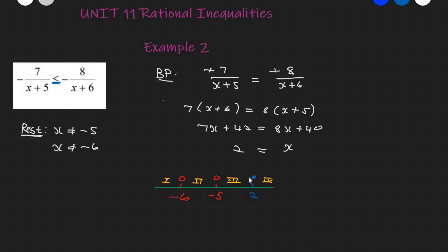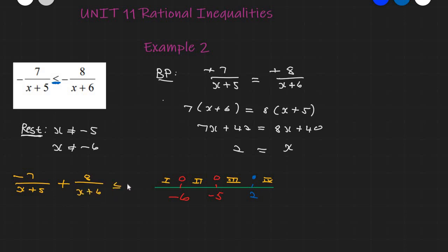Testing each region can be difficult if we compare the two sides directly, so instead we move everything over to one side: minus 7 over (X plus 5) plus 8 over (X plus 6) less than or equal to 0. Now testing is easier — a negative answer means true, a positive answer means false.